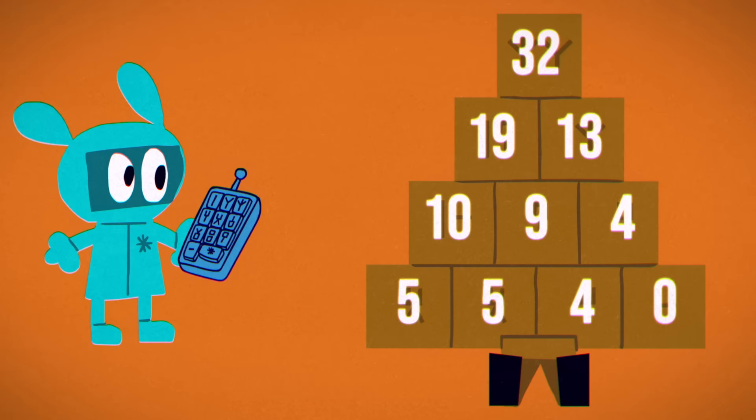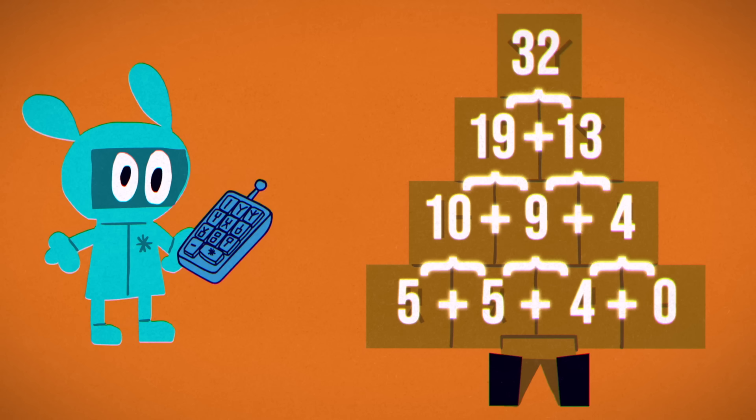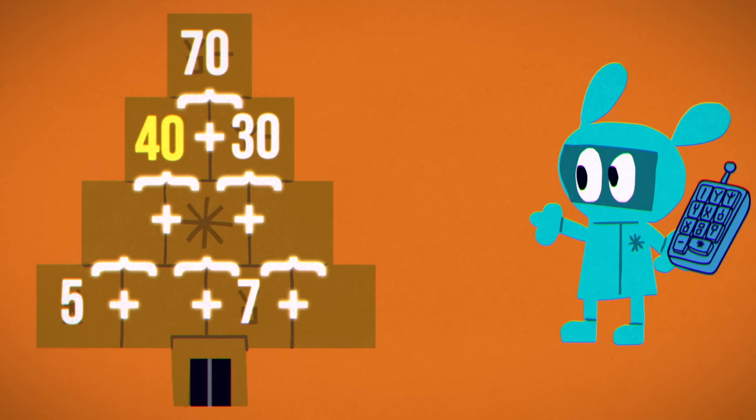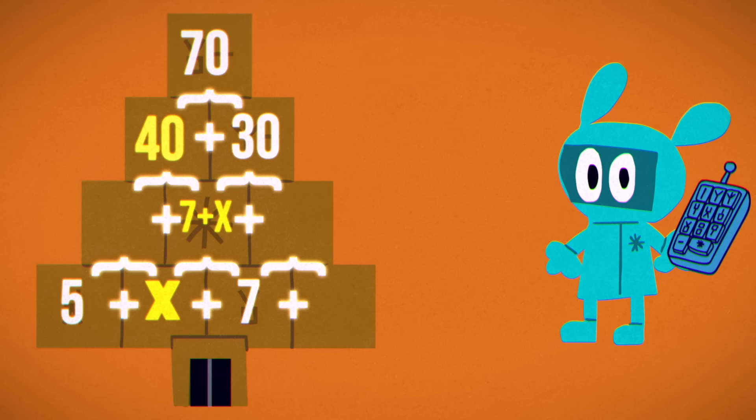The pattern revealed by the second pyramid is that every number is the sum of the two numbers directly beneath it. If that applies to the sealed pyramid, 40 clearly belongs to the left of 30. The center number is the sum of 7 and an unknown—call it x. The value of x can be determined by trial and error, but it's quicker to use algebraic reasoning.